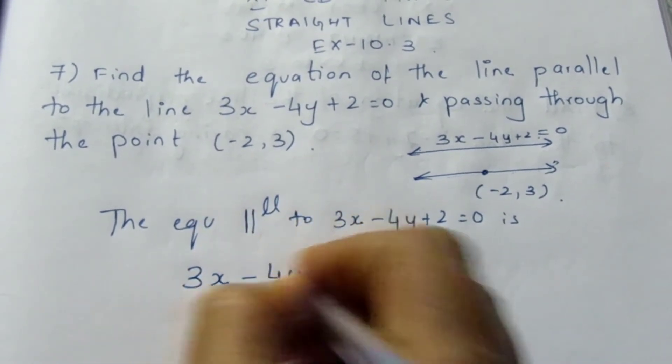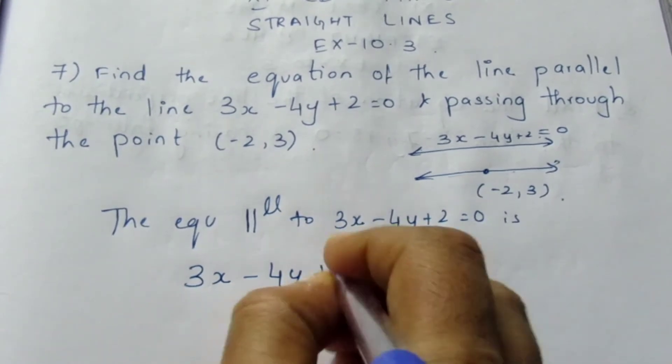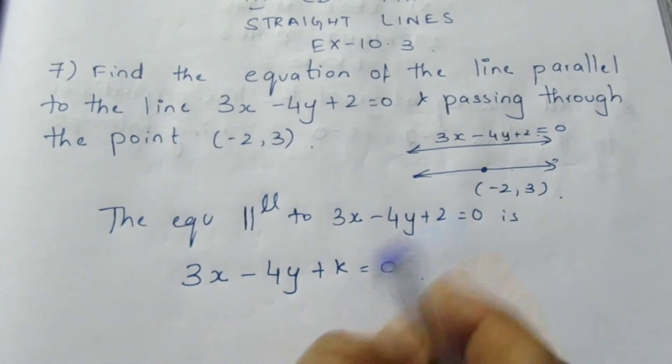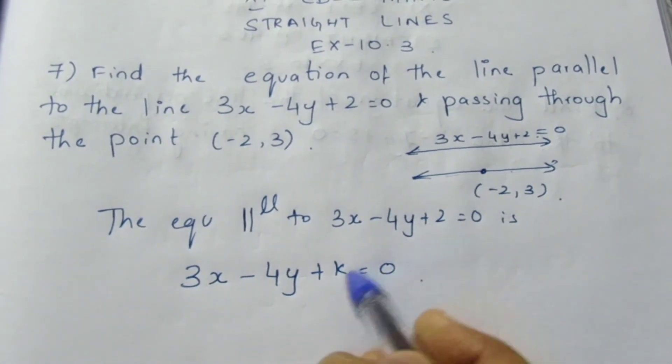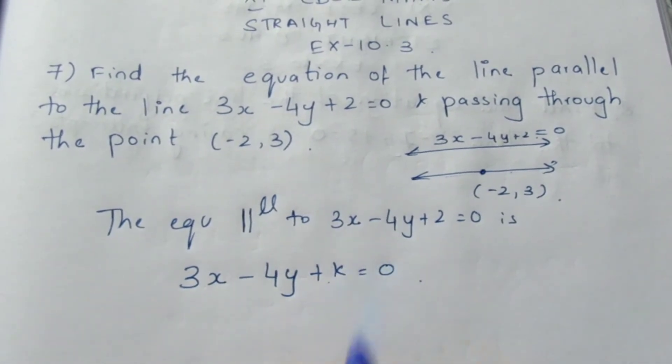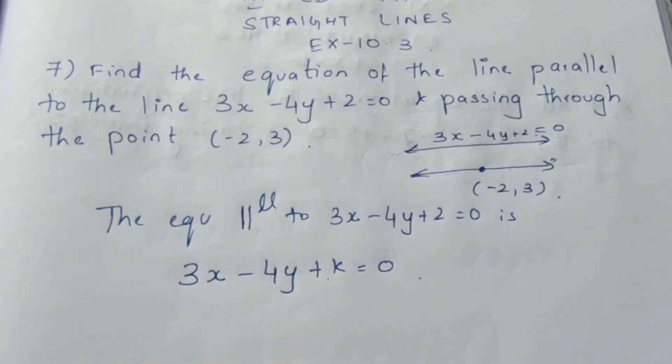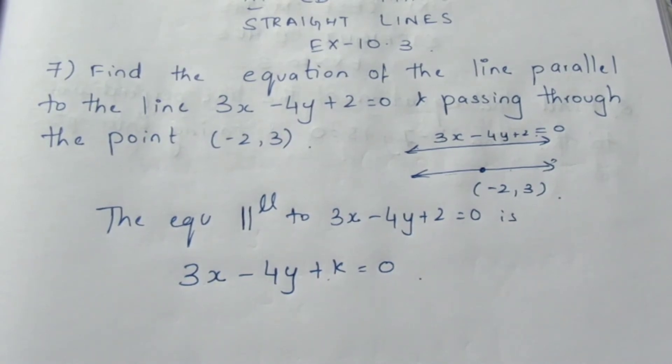So 3x minus 4y and the constant term varies, so it is plus k equal to 0. The x coefficient and the y coefficient, even the sign will be same. So you can directly write the term as it is.